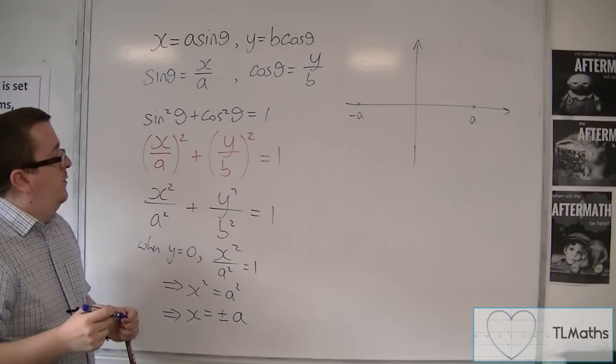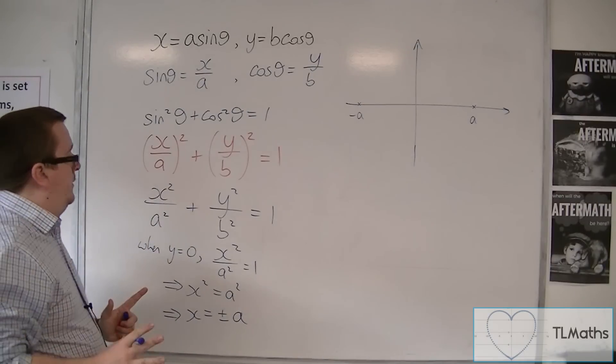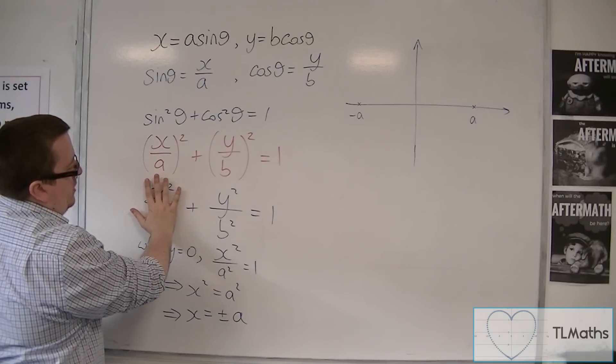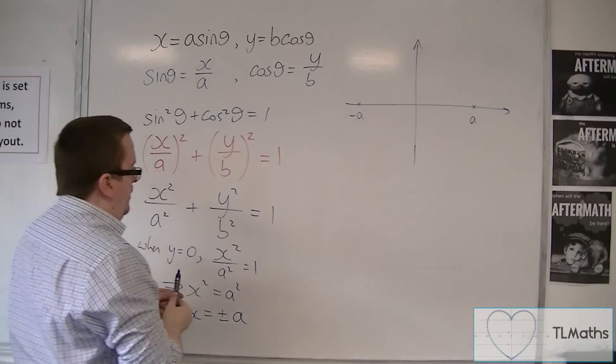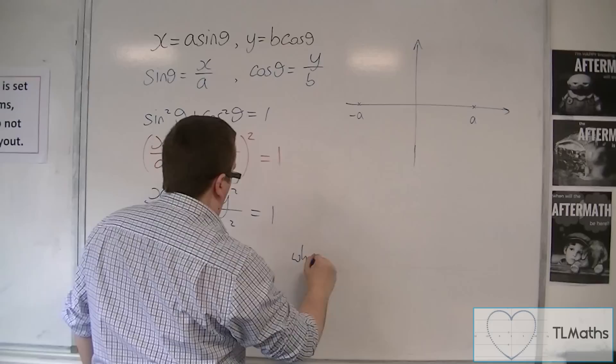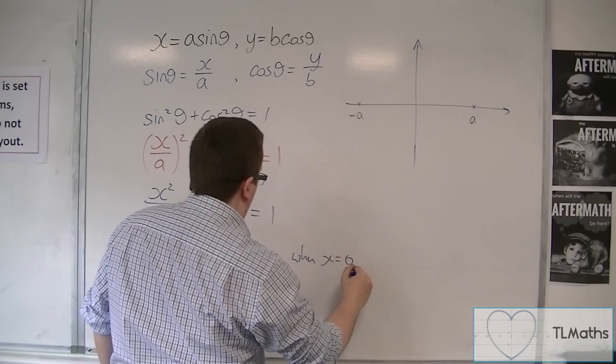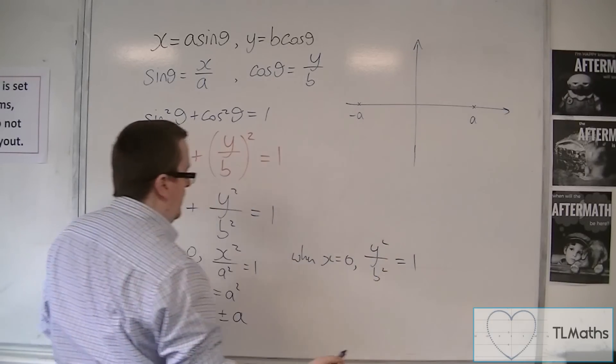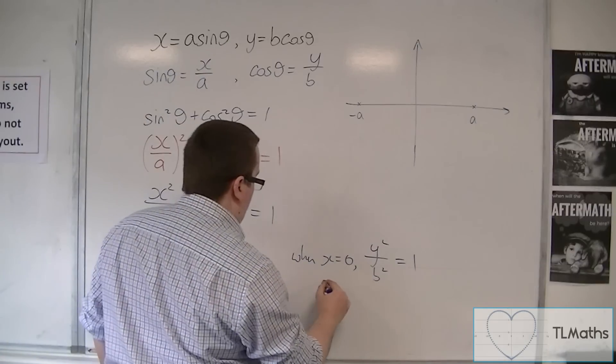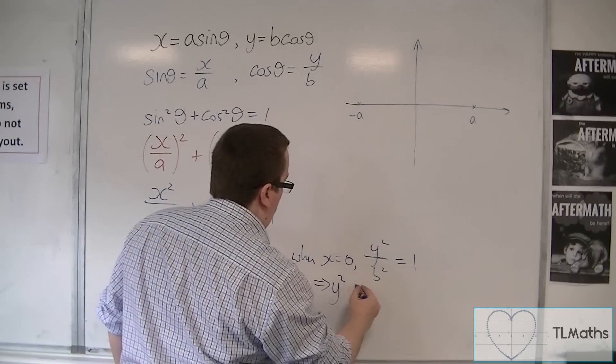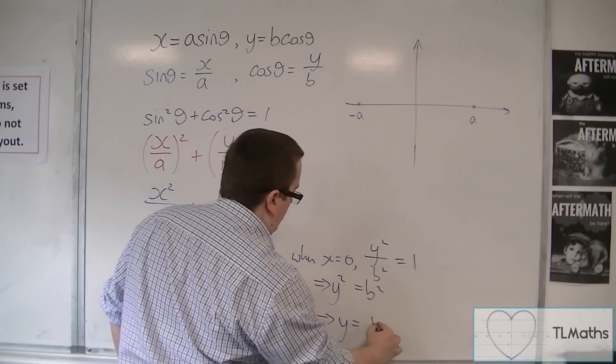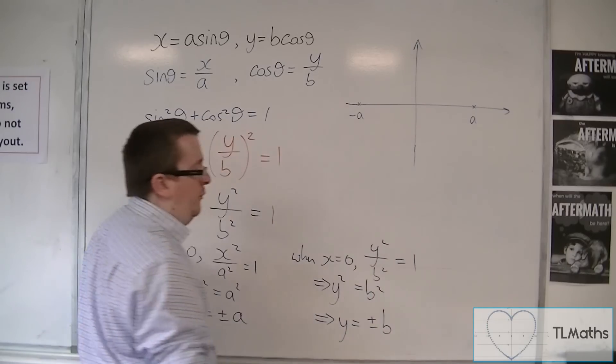Now how about where it crosses the Y axis? That would be when X is 0. When X is 0, we get Y squared over B squared equals 1. Multiply both sides by B squared, so Y squared is B squared, and then square root both sides, and you get Y is plus or minus B.